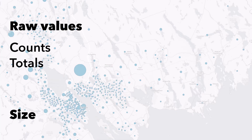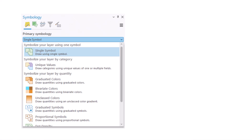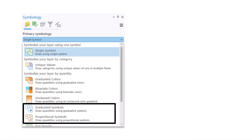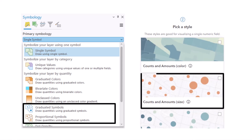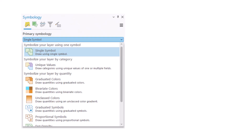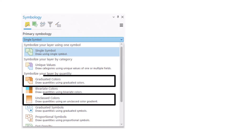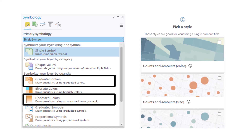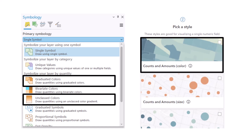So if you want to map polygons with raw values, use size. In ArcGIS Pro, you can use graduated symbols or proportional symbols. And in ArcGIS Online, you can use counts and amounts size. And if you want to map polygons with derived values, use color. In ArcGIS Pro, you can use graduated colors or unclassed colors. And in ArcGIS Online, you can use counts and amounts color.